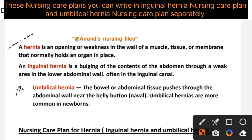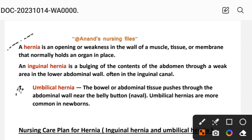Hernia is an opening or weakness in the wall of a muscle, tissue, or membrane that normally holds an organ in place. Inguinal hernia is a bulging of the contents of the abdomen through a weak area in the lower abdominal wall, often in the inguinal canal. In umbilical hernia, the bowel or abdominal tissue passes through the abdominal wall near the belly button (navel). Umbilical hernias are more common in newborns.